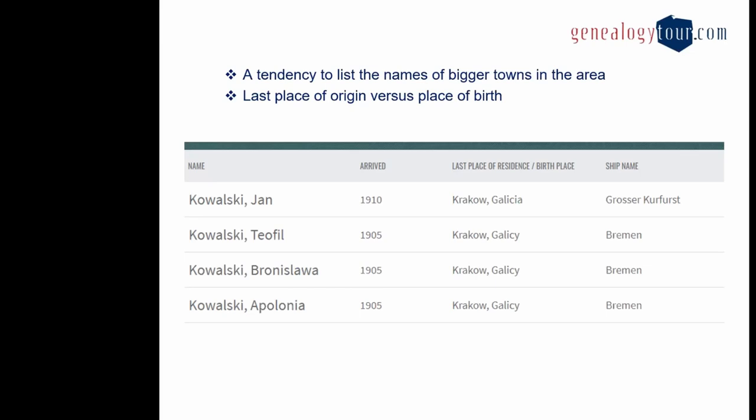In 80% of cases when our customers tell us their family is from Krakow, they're actually not from Krakow — they could be from a town 100 miles away, but they gave the most recognizable name. Also, the last place of residence and birthplace are not always the same. People used to move a lot, especially in central Poland around Warsaw, walking from village to village searching for jobs and better opportunities. So if a Ship Manifest tells you the last place of residence, be aware that's not necessarily their place of birth.